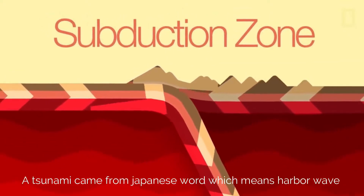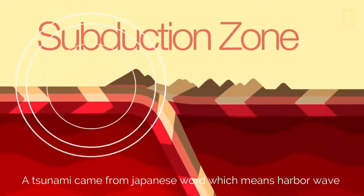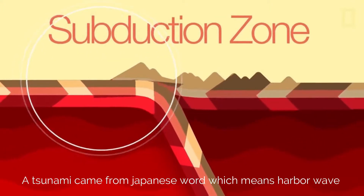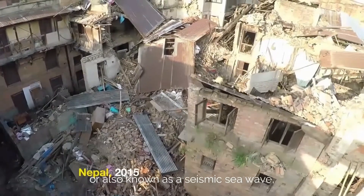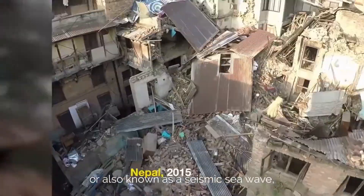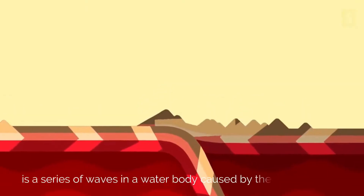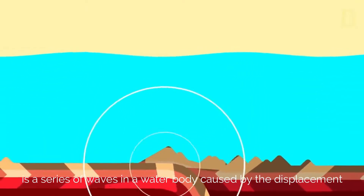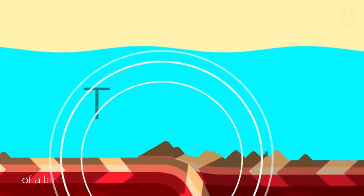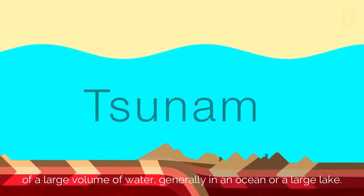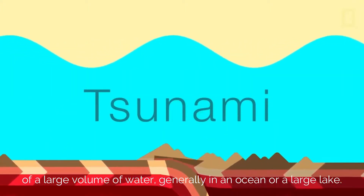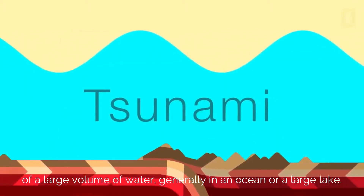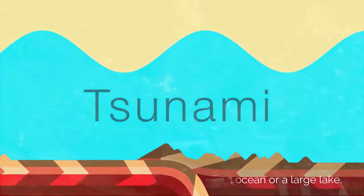Tsunami. A tsunami comes from the Japanese word, which means harbor wave, also known as a seismic sea wave. It is a series of waves in a water body caused by the displacement of a large volume of water, generally in an ocean or a large lake.